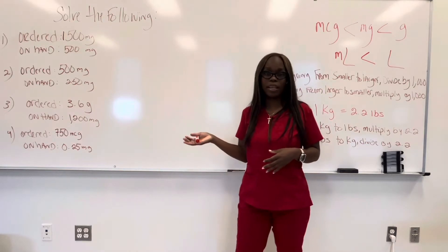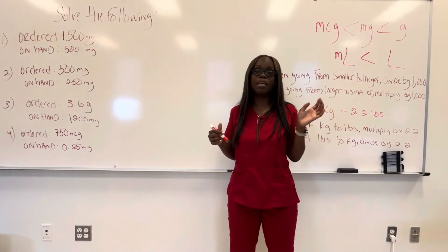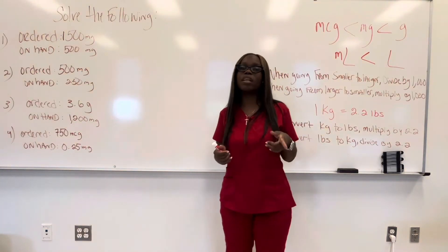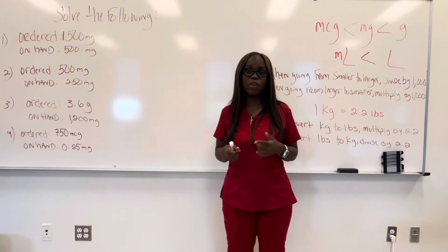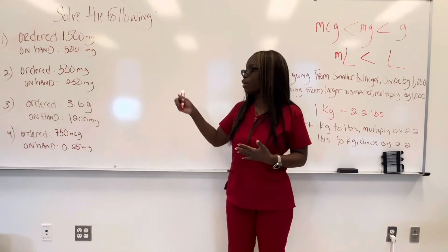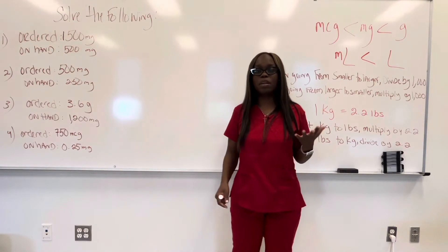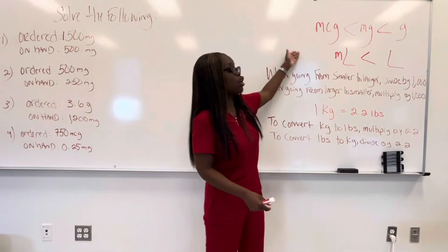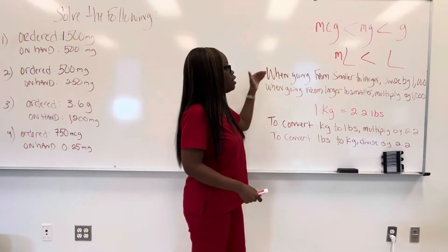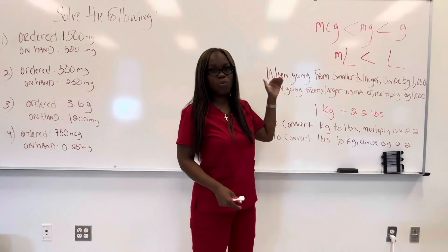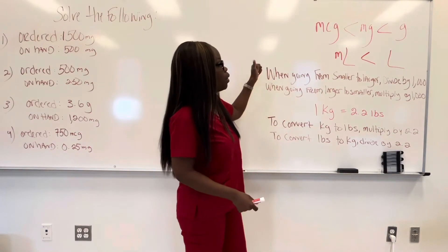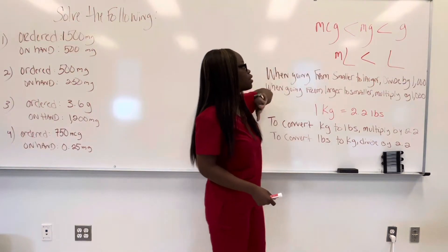We're going to start with adult calculations, and then we'll do pediatric calculations later, because you have to first know adult calculations before you can even do the pediatric calculations. The one thing you want to do is become familiar with the metric table. The metric table is going to be your foundation because when you have to do certain conversions, it's going to bring you back to the metric table. For right now, we're just going to focus on micrograms and milliliters.